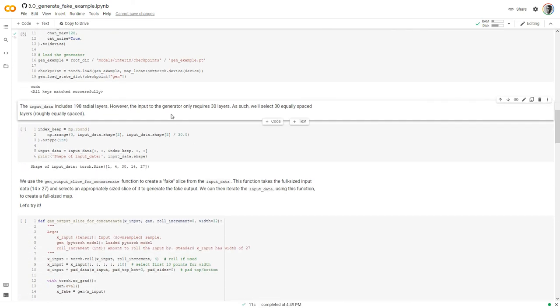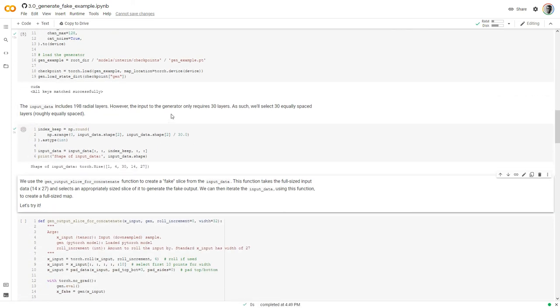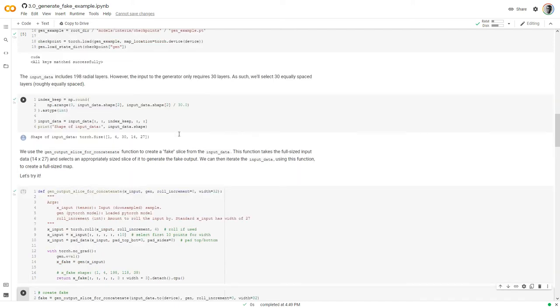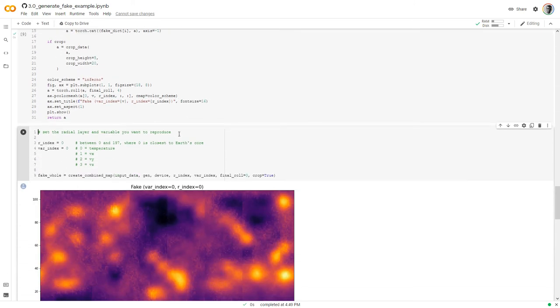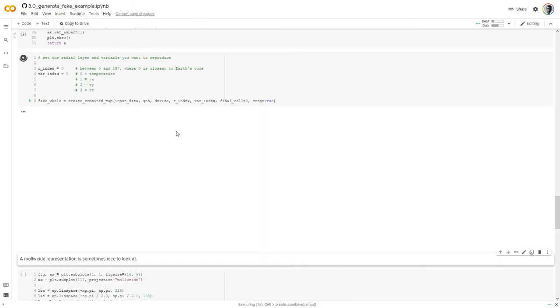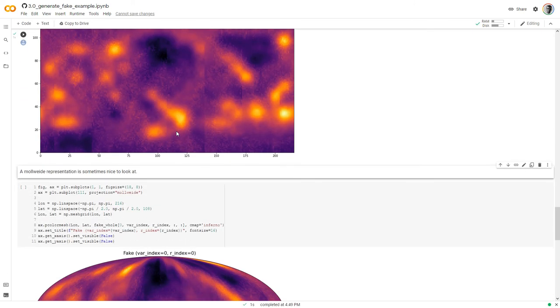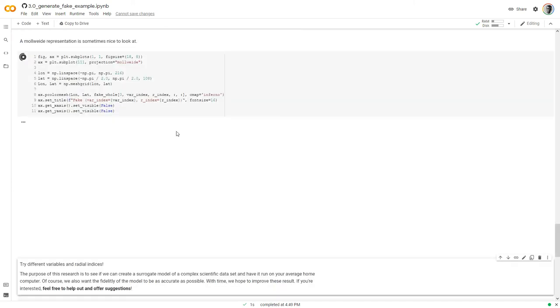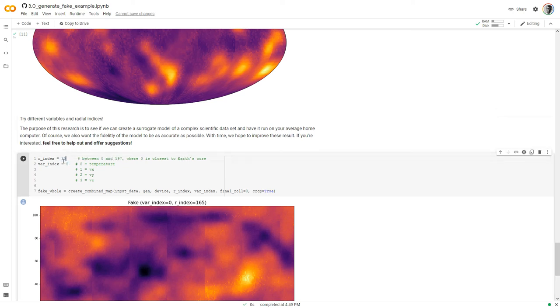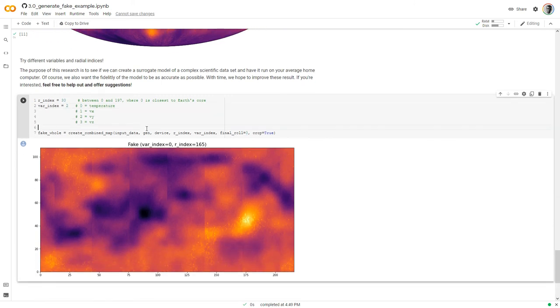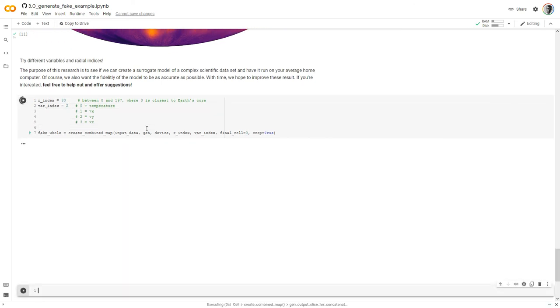And then we can take the input data and feed that into the trained generator. That's what one of the slices looks like. We can concatenate a bunch of those slices together to create a full representation. And then put it into a nice visual format there. We can also change the index and the variable to get a different result. Like so.